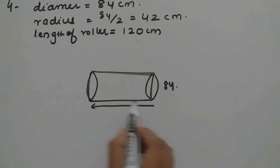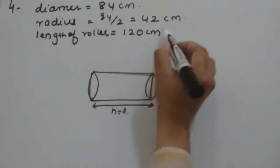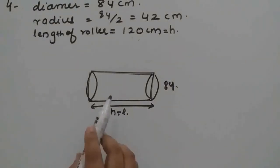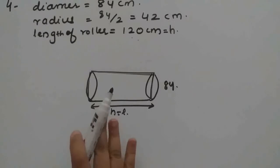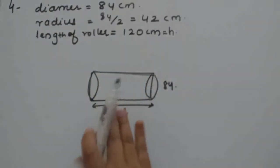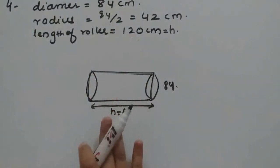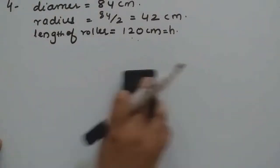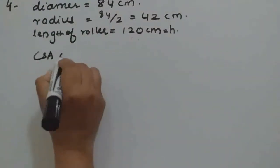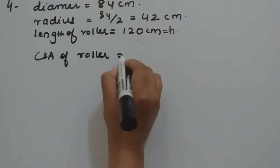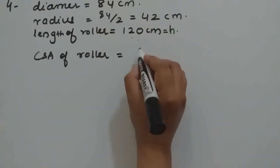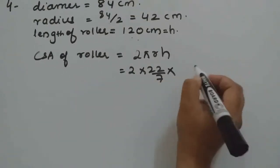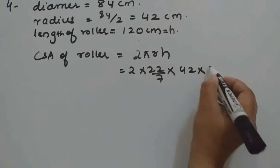Length of the roller is given, which means height. This can be treated as height. Now 500 complete revolutions are given to level a playground. We know to level a playground only the curved surface area of the cylinder is used. So first we will find the curved surface area of the roller. CSA of roller equals 2πRH. So 2 into 22/7 into R is 42 and H is 120.